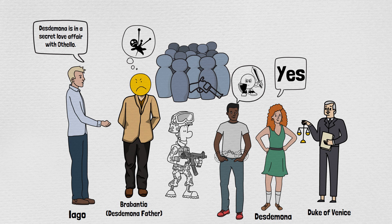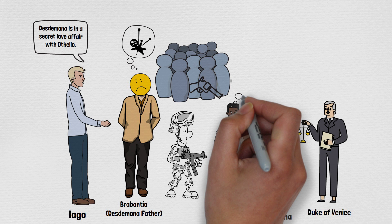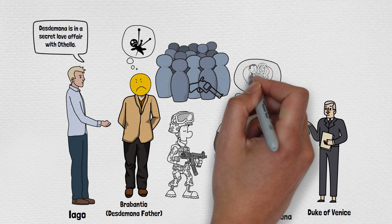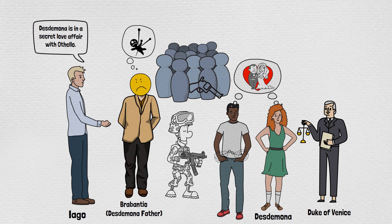As the Duke is aware that Othello is a brave man and the country requires him as a general in the current war with Turkey, so he gives decision in favor of Othello stating a legal marriage of him with Desdemona. Brabantio who is the father of Desdemona he has no choice. No one can go against the decision of Duke. So he too agrees to the marriage of Othello and Desdemona.